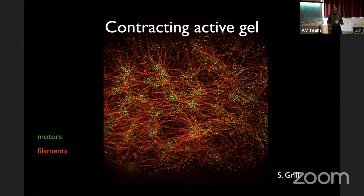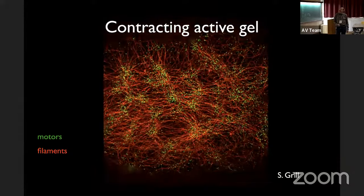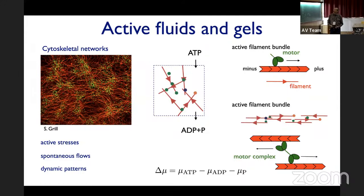Key here is mechanical activity — contractility — in the form of an active gel below the cell membrane. There's a thin layer of a cytoskeletal network made by actin filaments, shown here in red from Stefan Grill's lab. High-resolution optical microscopy shows both myosin motors in green and filaments in red. Together they form an active material that is contractile, essentially a two-dimensional sheet — a surface-like material.